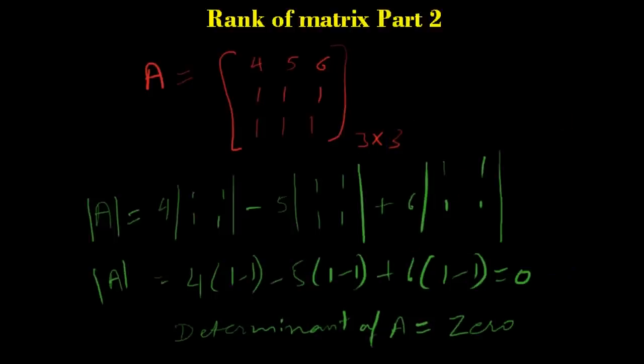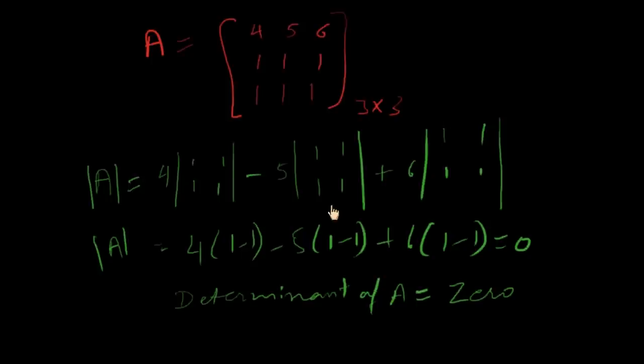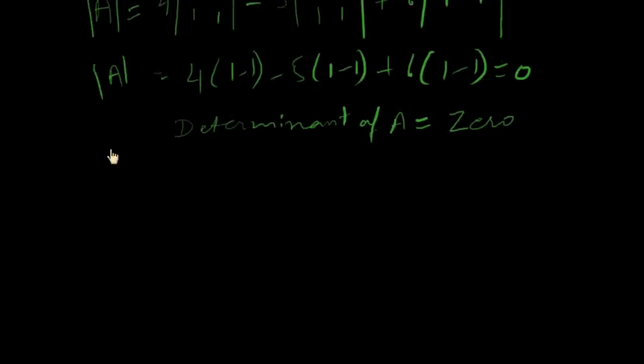So we are calculating a determinant of its sub-matrix. Four, five, one, one, one, and its determinant is four into one minus five into one.